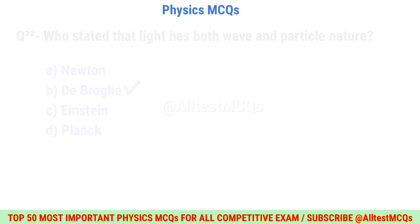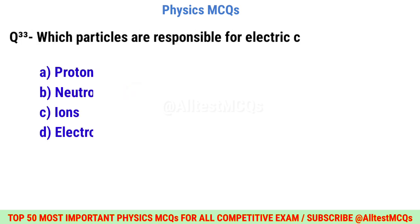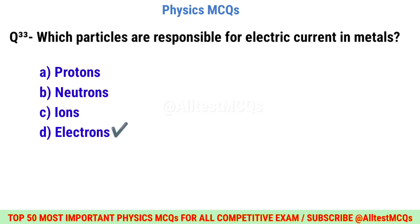Question number thirty-three: Which particles are responsible for electric current in metals? Correct option is D: Electrons.